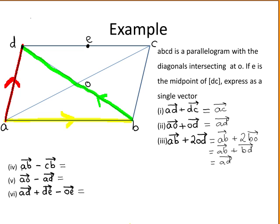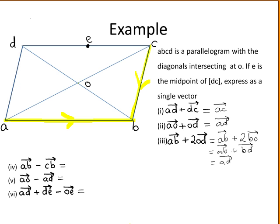The fourth part asks you to find vector AB minus vector CB. We have vector AB, and we want minus vector CB. Minus vector CB is the vector that goes in the opposite direction, which is equal to vector BC. So this becomes vector AB plus vector BC. When you change the sign of a vector its direction changes, and vice versa. Adding these using the triangle law — starting at A going to B, then B to C — our overall displacement is the vector AC.